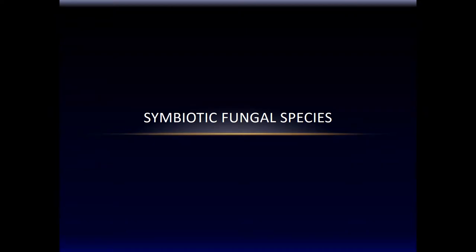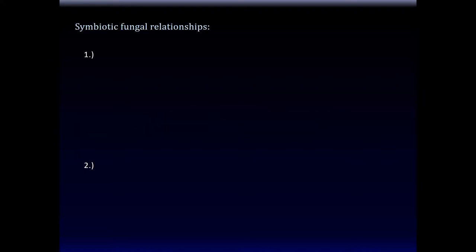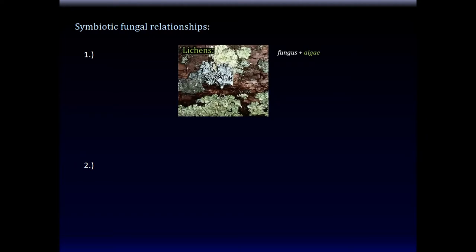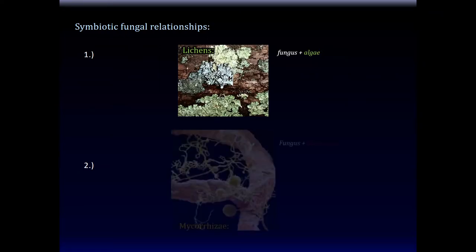The last topic in this chapter is symbiotic fungal species. Symbiotic fungal relationships — there are two examples we have talked about before. One is lichens. We studied this when we studied algae, the photosynthetic protists. A lichen was a friendship between the fungus and the algae. We studied this previously from the algae perspective, and we shall study it now from the fungus perspective.